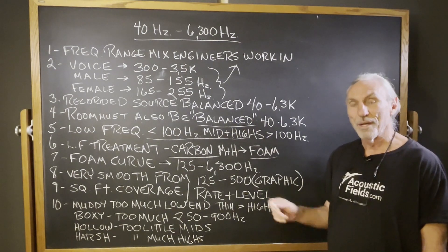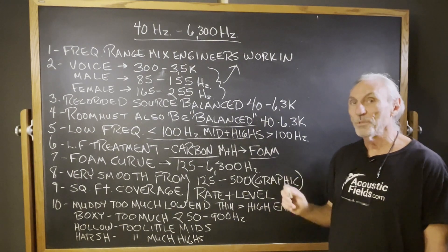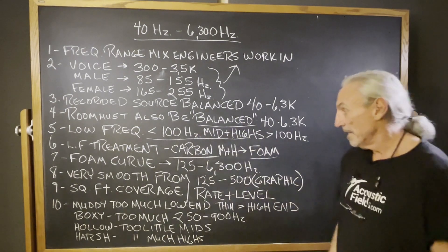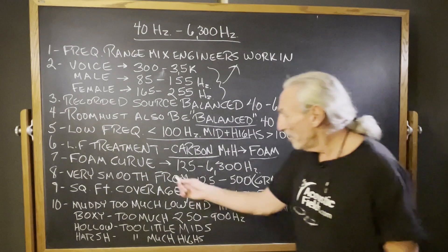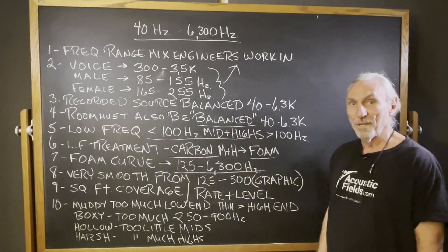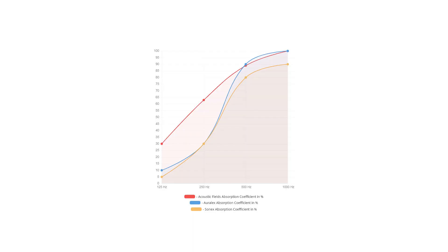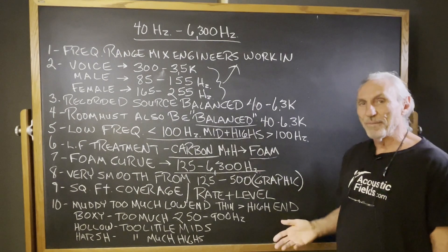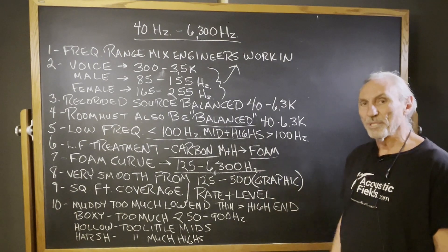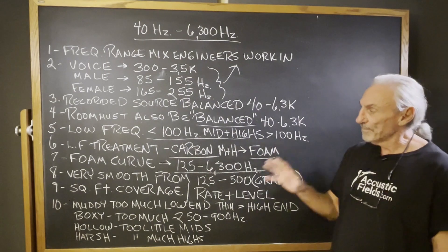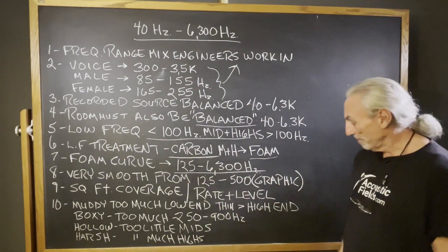That foam took years to develop and a couple million dollars. It's the smoothest response foam in the marketplace, bar none — I've never found a smoother one. Our foam curve covers 125 to 6,300 Hz and it's very, very smooth. You can see in this graphic that we have that kind of smoothness from 125 to 500. That's the range you really have to be cognizant of. Anything after 500 cycles is almost always 100% absorption when you're dealing with foam, but that 125 to 500 cycle range is very, very critical.